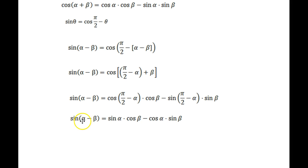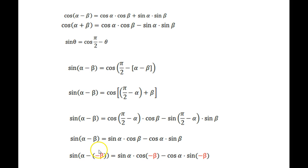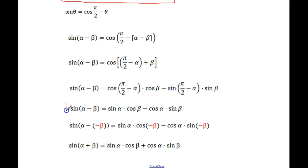To get the fourth and final formula, we take sin(α−β) = sinα cosβ − cosα sinβ and replace beta with minus beta, giving sin(α+β). Remember, cos(−β) = cos β because of the even function property of cosine, but sin(−β) = −sin β. So the sign on the sine term changes: sin(α+β) = sinα cosβ + cosα sinβ.